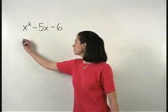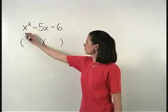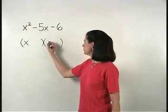So starting with our two sets of parentheses, x squared factors as x times x.